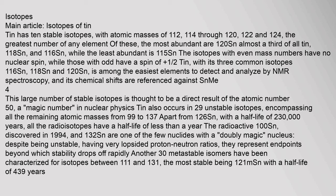Tin, with its three common isotopes 116Sn, 118Sn and 120Sn, is among the easiest elements to detect and analyze by NMR spectroscopy, and its chemical shifts are referenced against SnMe4. This large number of stable isotopes is thought to be a direct result of the atomic number 50, a magic number in nuclear physics. Tin also occurs in 29 unstable isotopes, encompassing all remaining atomic masses from 99 to 137. Apart from 126Sn with a half-life of 230,000 years, all radioisotopes have a half-life of less than a year.